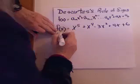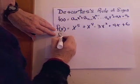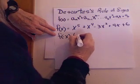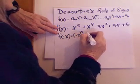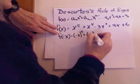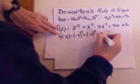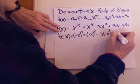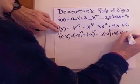Alright, let's find the number of sign changes for a negative. So we put in f(-x). Here we go. -x to the fifth, plus, -x to the fourth, minus, three times -x squared, plus four times -x, plus six.